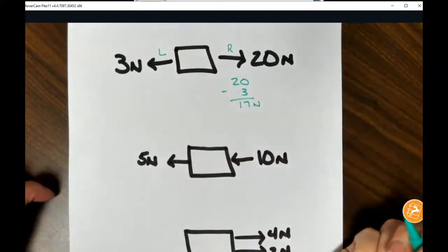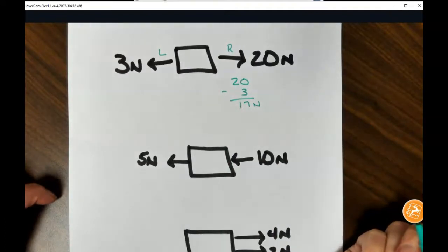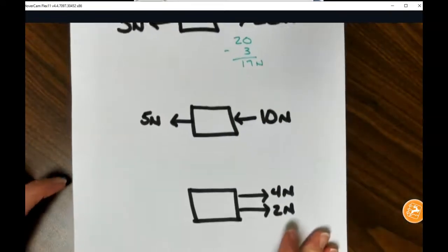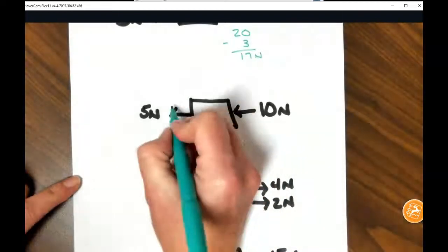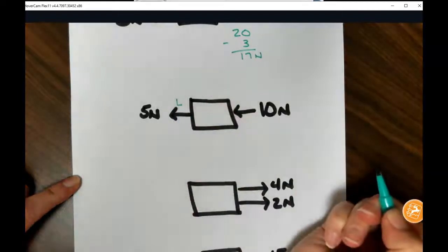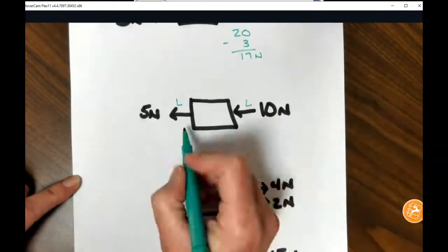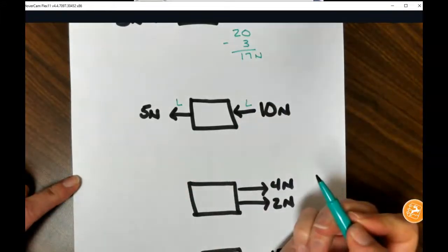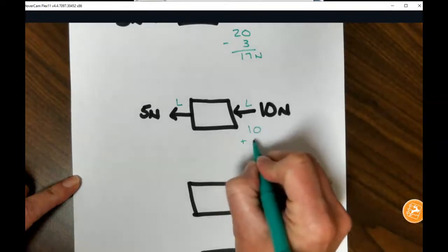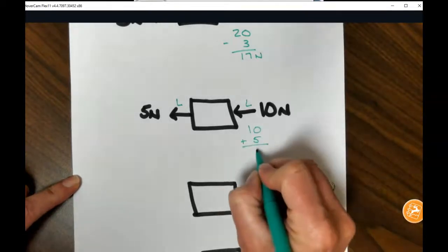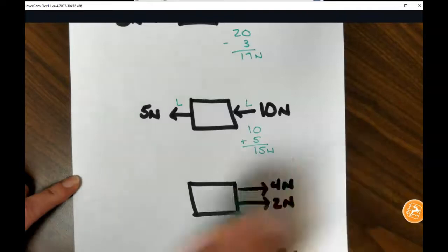Remember, the SI unit for force is always in newtons. In our second scenario, we have five newtons of force to the left and we have 10 newtons of force also to the left. Because these are working in the same direction, we would need to add them for a total of 15 newtons of net force.